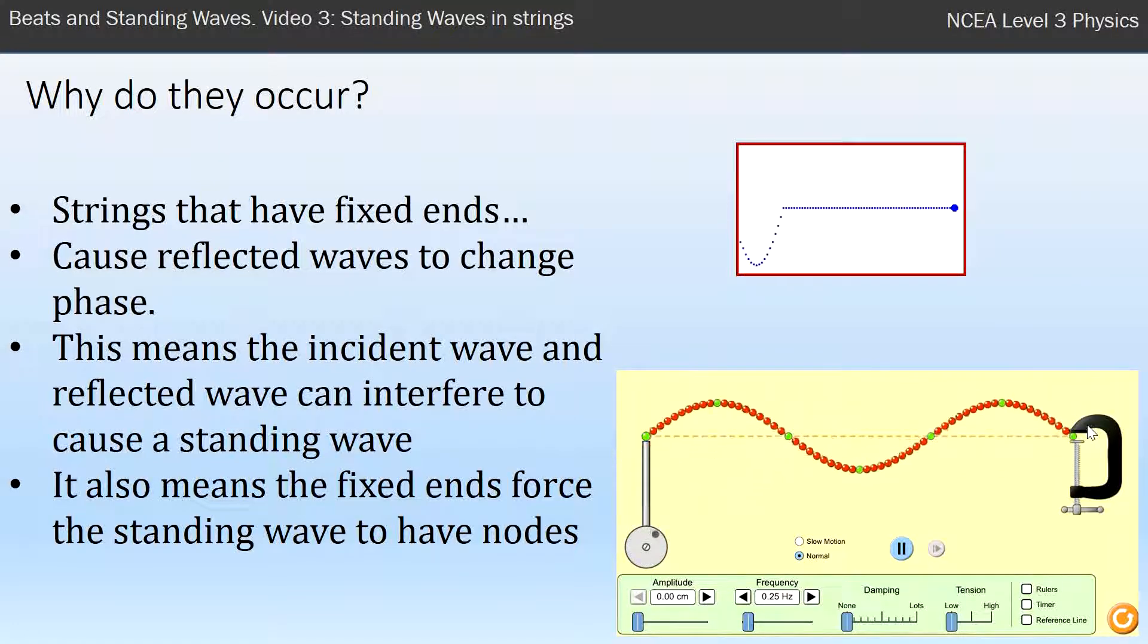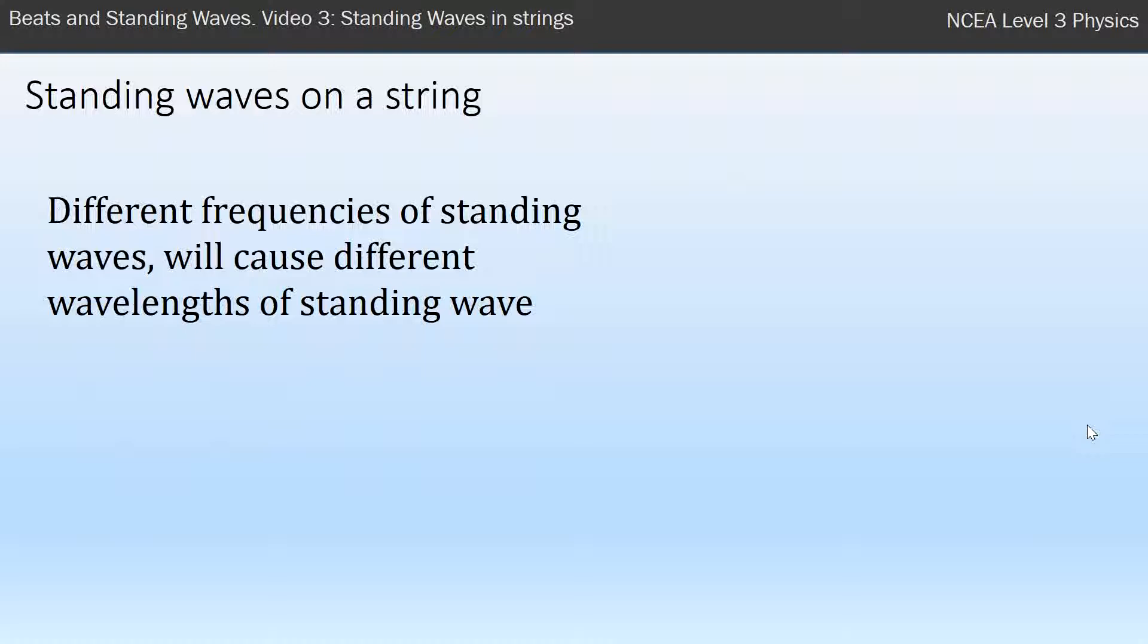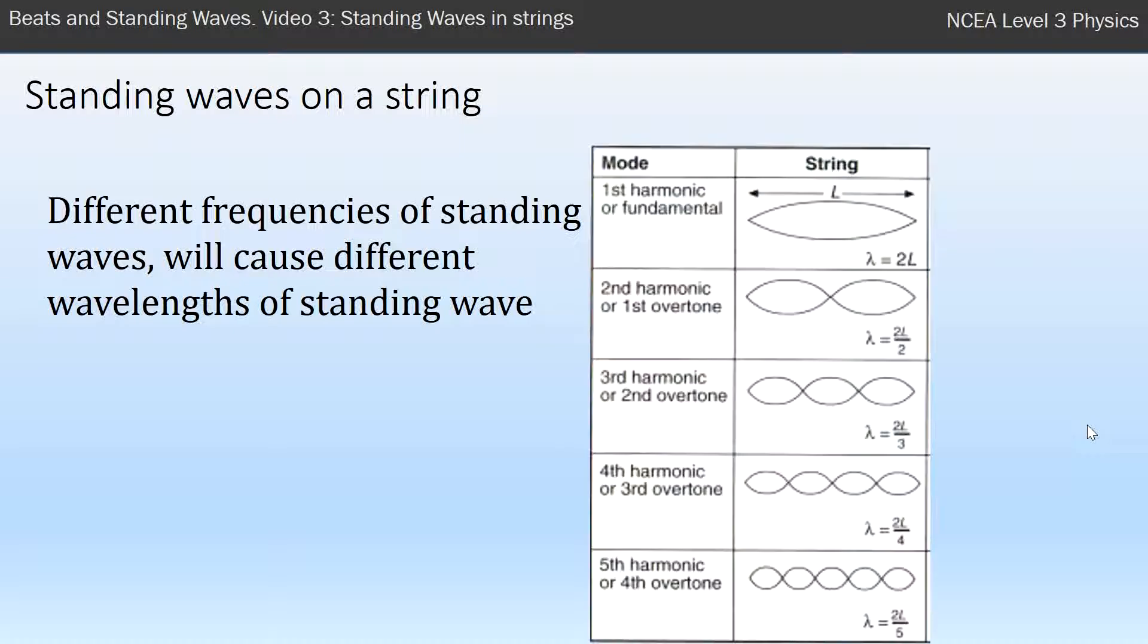So here's what they are. You can have different frequencies of the standing waves and it causes different wavelengths, but they've all got the same shape and that is that they have nodes at the end. So you have to be able to go through and draw each one of these if you need to.